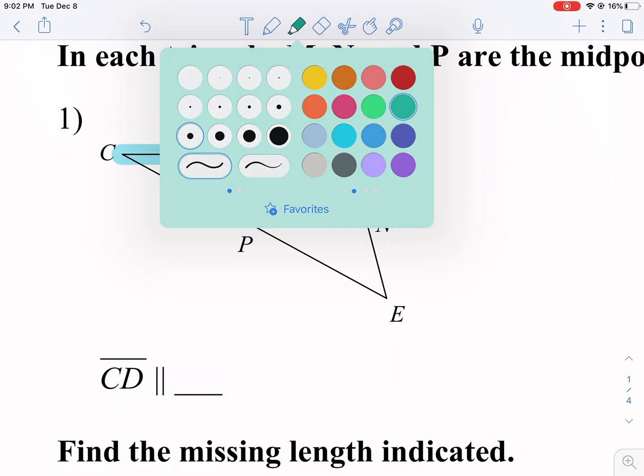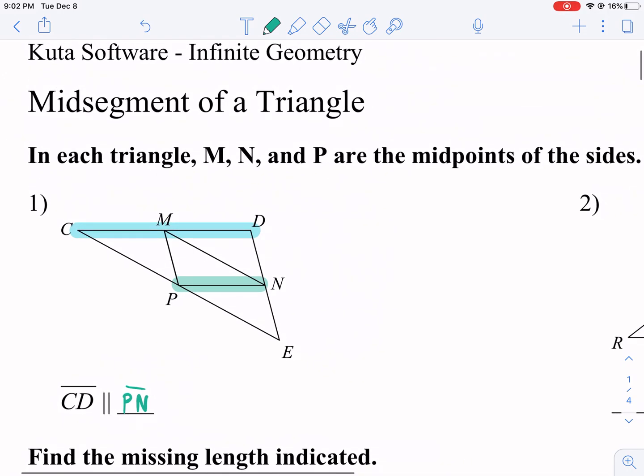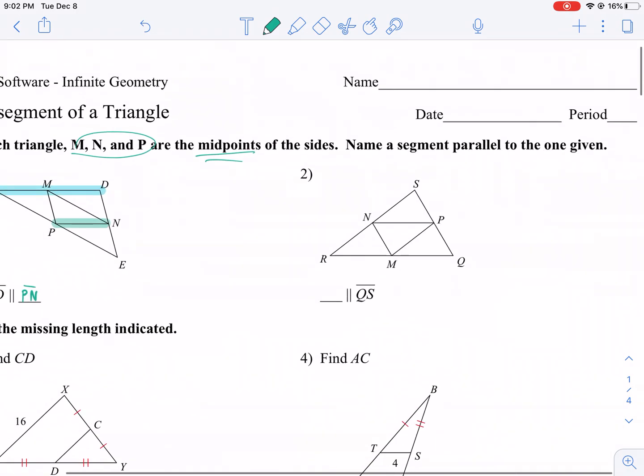Well, it's going to be parallel to a mid-segment. Where is that mid-segment? It's very obvious that it is there. What is the name of that mid-segment? It is PN. Before we can make that assumption, we have to know that they're mid-points, and it's saying that they are mid-points of the sides.